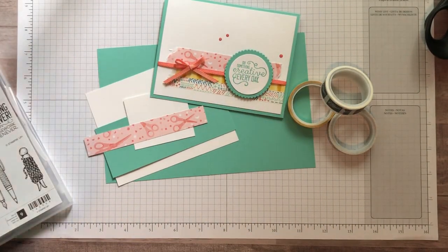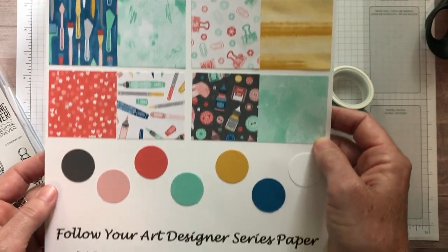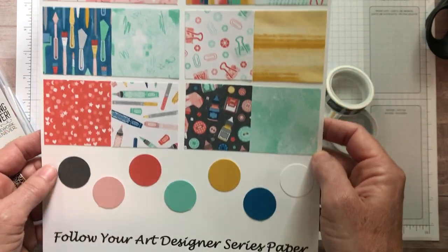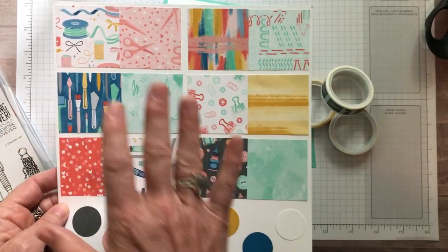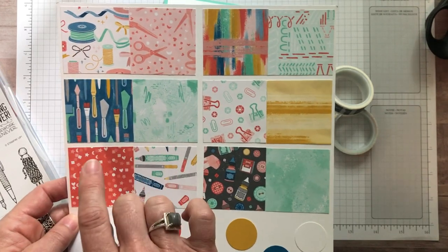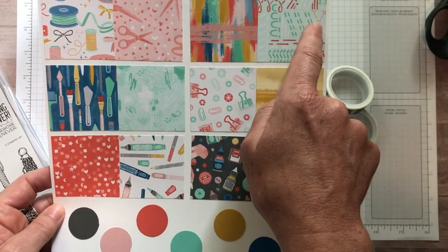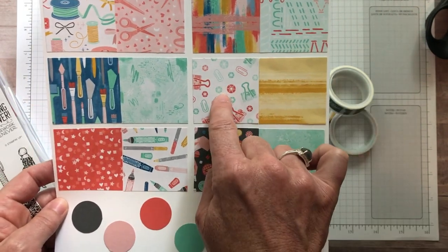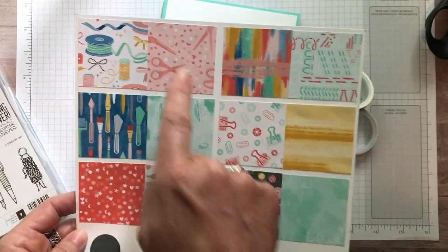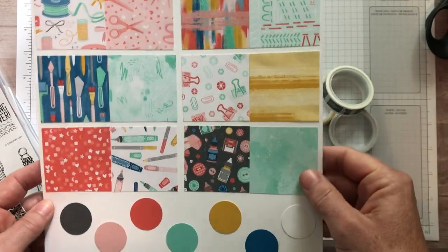I have to show you guys I made these samplers for all of our designer series paper in the annual catalog. This is the Follow Your Art designer series paper. I've got front and back of every piece in that DSP pack. For example, if you say oh I don't know if I like that pattern, well this is what's on the other side. You run into more trouble when you're like oh I love both of those, which side am I going to use? That happens to me more than not.